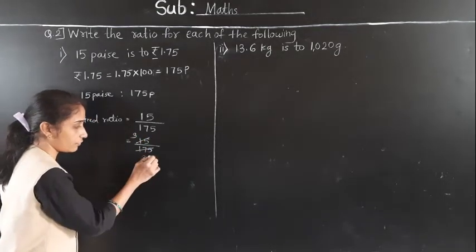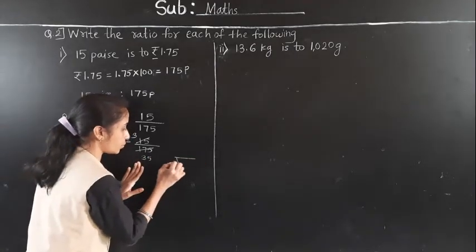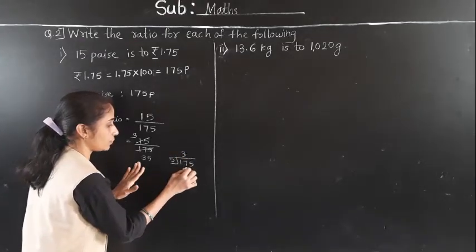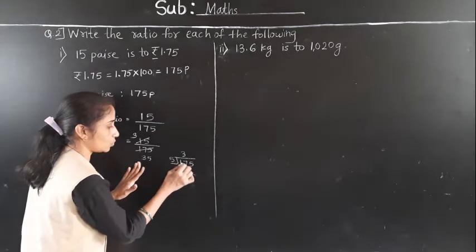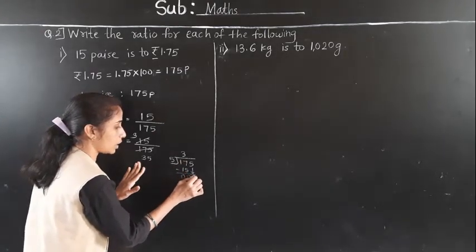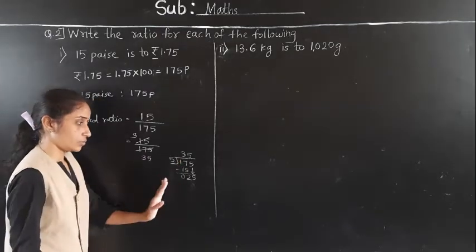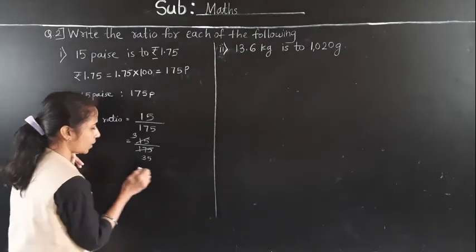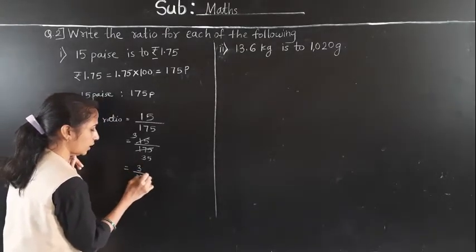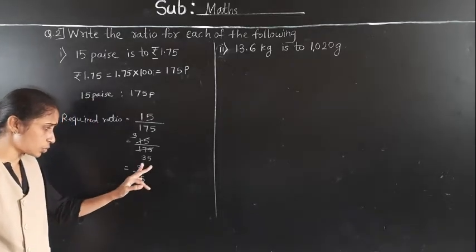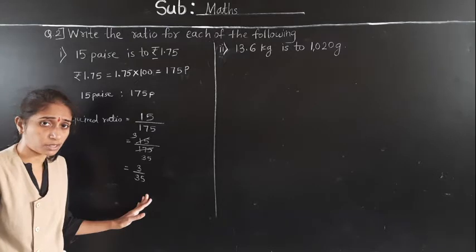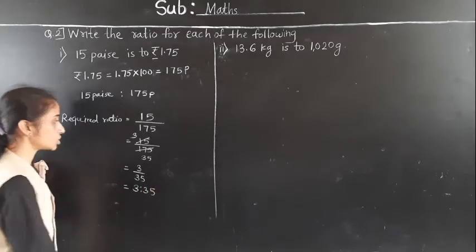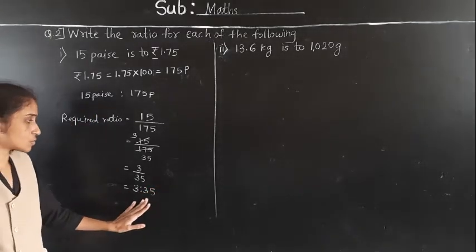Divide by 5 for numerator: 5 threes are 15. Divide by 5 for denominator: 175 divided by 5 — 5 fives are 25, so we get 35. Now see if 3 and 35 are divisible by any same number — no. So the ratio is 3 to 35.